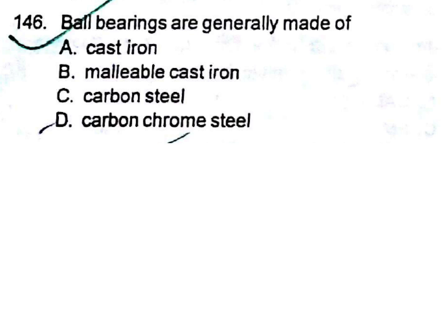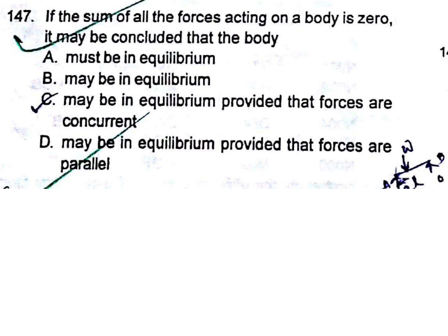Question: If the sum of all the forces acting on a body is 0, it may be concluded that the body: A) must be in equilibrium, B) may be in equilibrium, C) may be in equilibrium provided that forces are concurrent, D) may be in equilibrium provided that forces are parallel. C is the answer — may be in equilibrium provided that forces are concurrent.